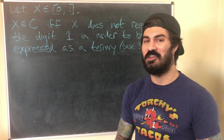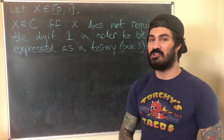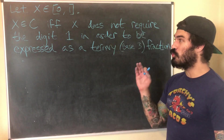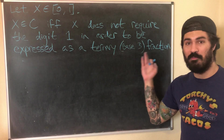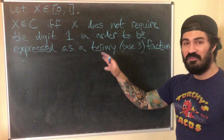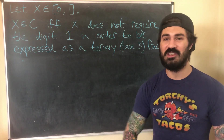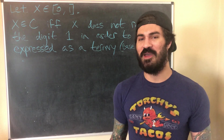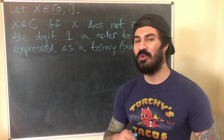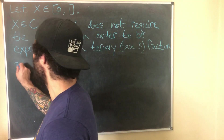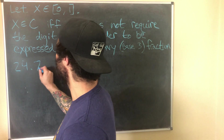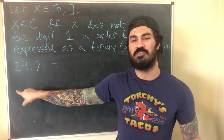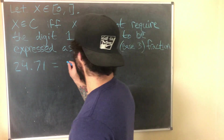Here's another way to characterize the Cantor set, which will be very useful for proving uncountability. Let x be an element of the closed interval [0, 1]. Then x is an element of the Cantor set if and only if x does not require the digit 1 in order to be expressed as a ternary (base-three) fraction. Quick review: in base 10, we use digits 0–9. A number like 24.71 is expressed as 2×10¹ + 4×10⁰ + 7/10 + 1/100.